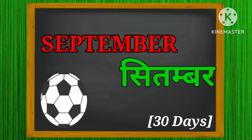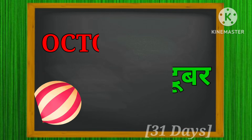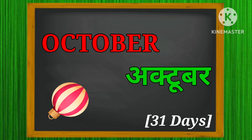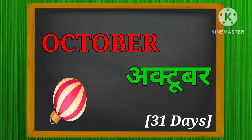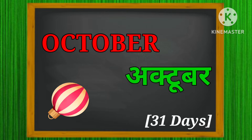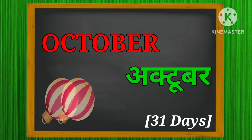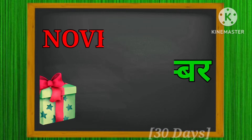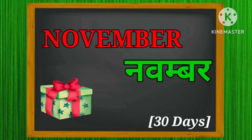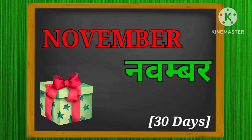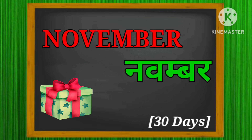September — there are 30 days in the month of September. October — there are 31 days in the month of October. November — there are 30 days in the month of November.